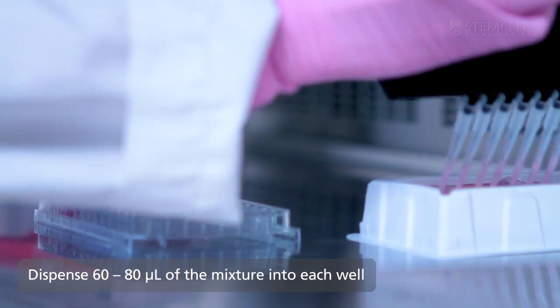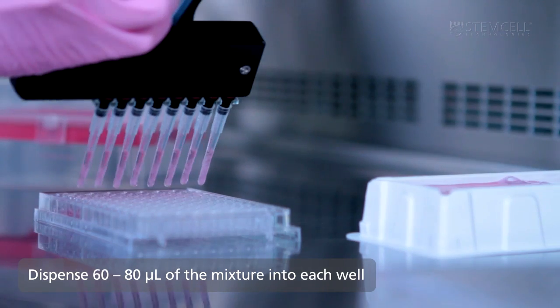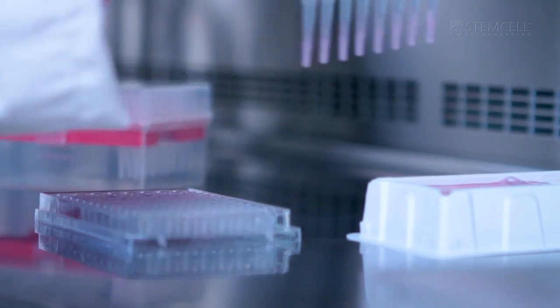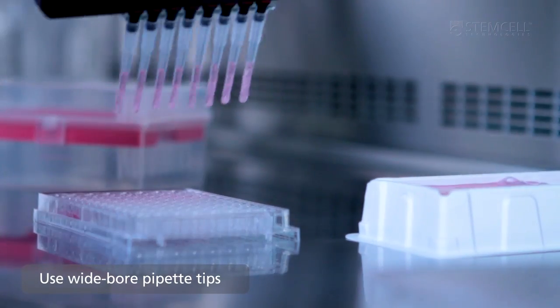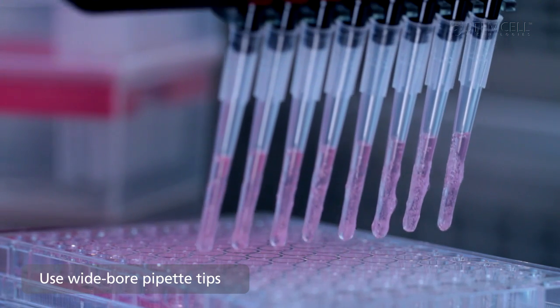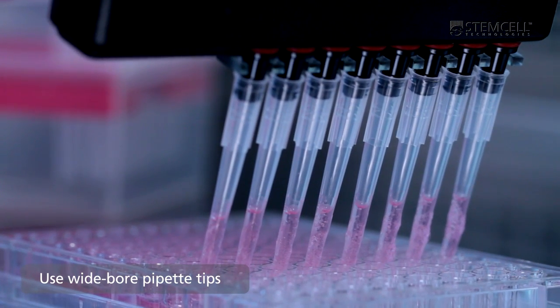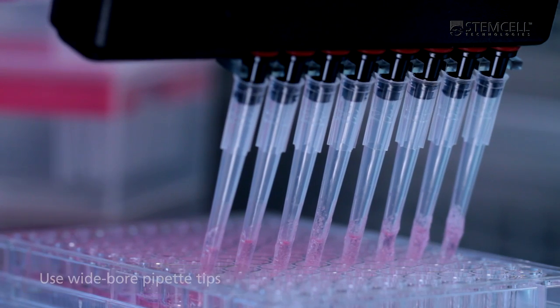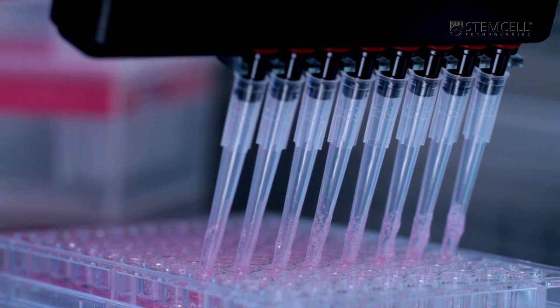Dispense 60 to 80 microliters of the mixture into each well. Use a multi-channel pipette and sterile wide-bore pipette tips. As medium D is viscous, it can be difficult to pipette. It is not critical to have exactly the same volume in each well.